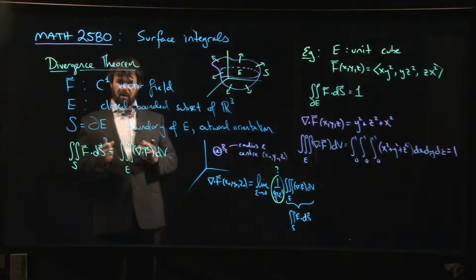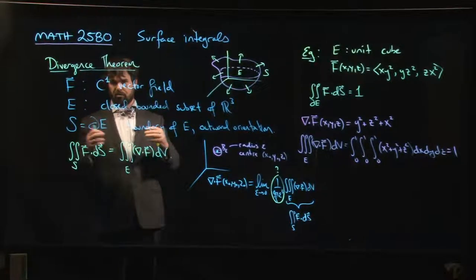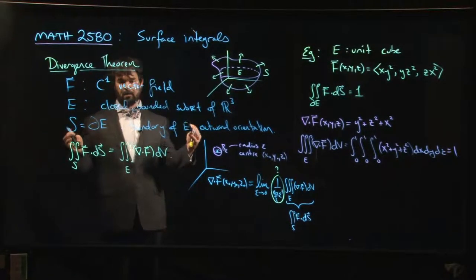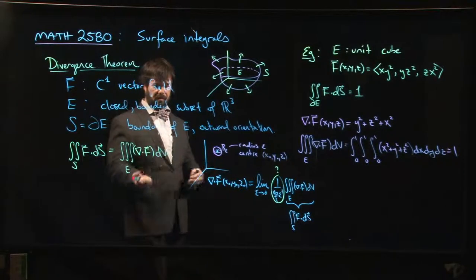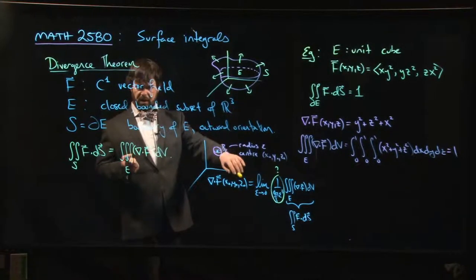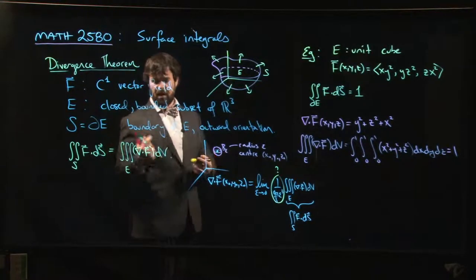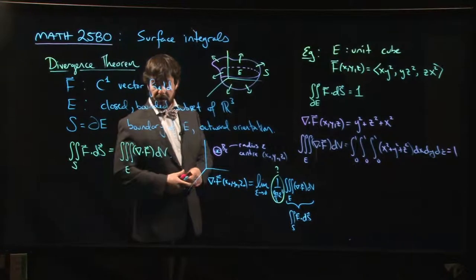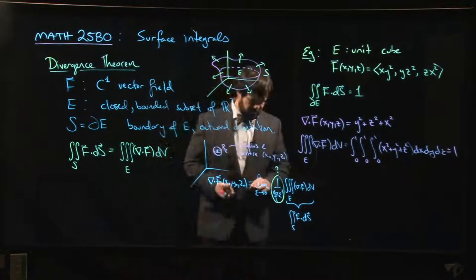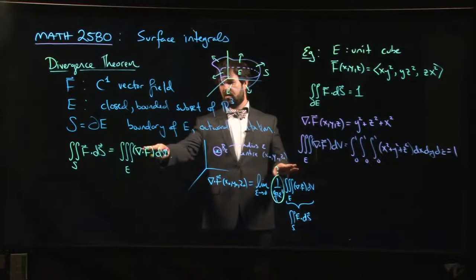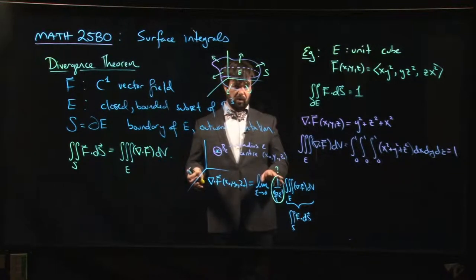The details aren't important. The idea here is that you can, with a bit of analysis that is maybe beyond what we want to do in this course, you know, this relates the divergence of your vector field to the flux across the surface, right? And it gives you this idea that we talked about when we first introduced divergence.